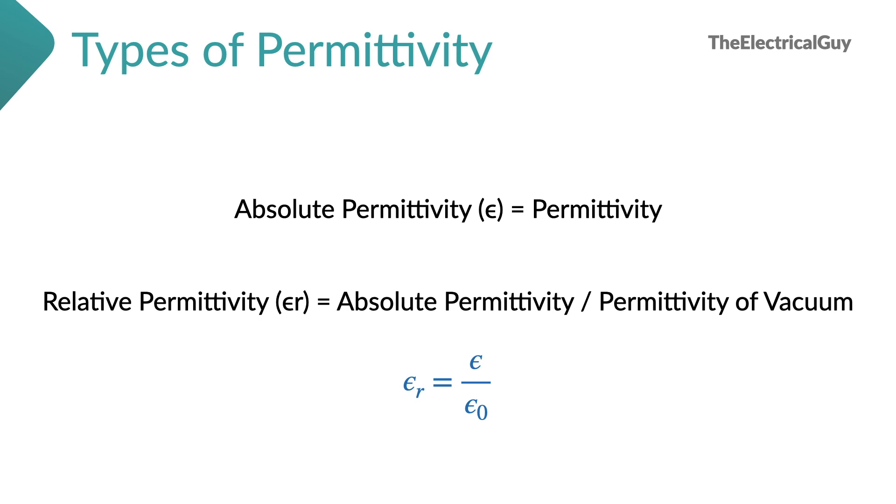Vacuum has least possible value of permittivity and hence we consider it as a base. Please note in engineering application permittivity is generally expressed as relative permittivity rather than the absolute permittivity. And relative permittivity is also called as dielectric constant.